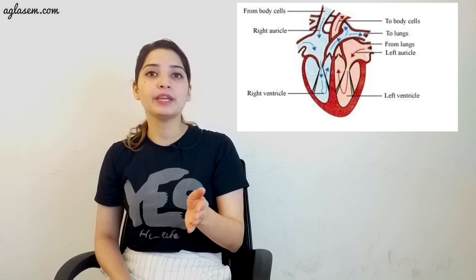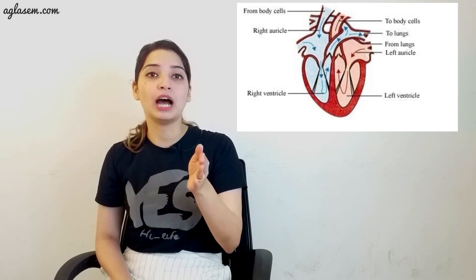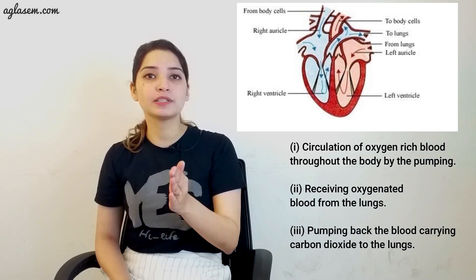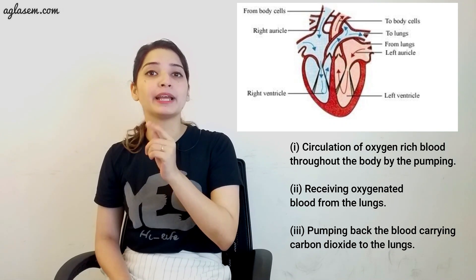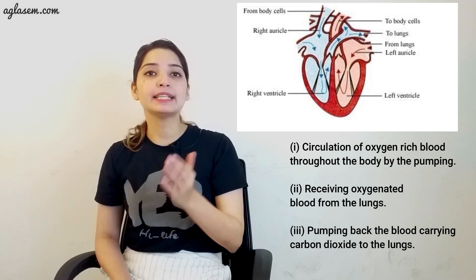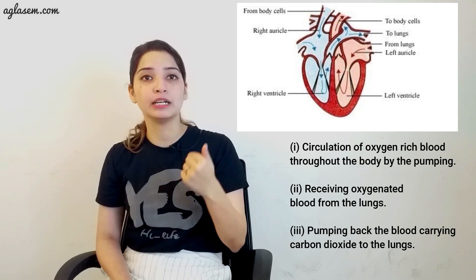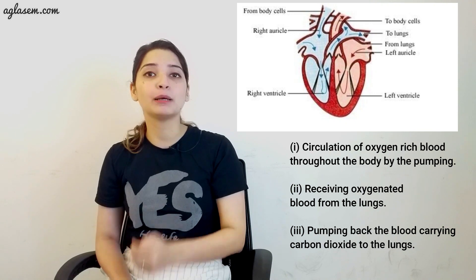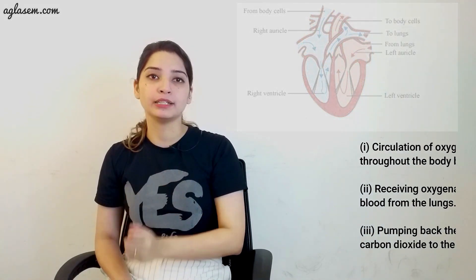Accordingly, we can make out that the main functions of the heart include: first, circulation of oxygen-rich blood throughout the body by pumping; second, receiving oxygenated blood from the lungs; third, pumping back the blood carrying carbon dioxide to the lungs.